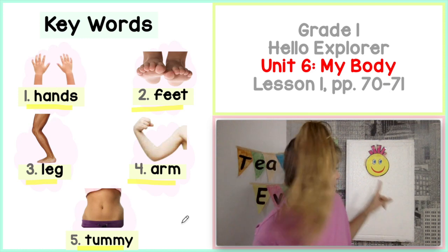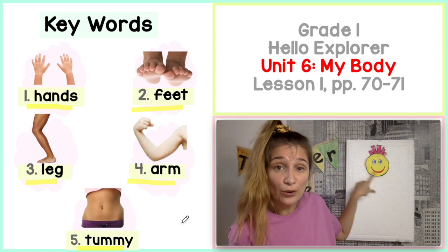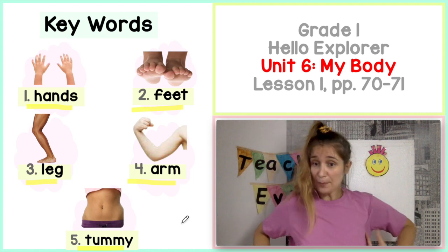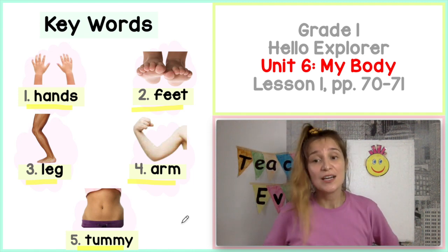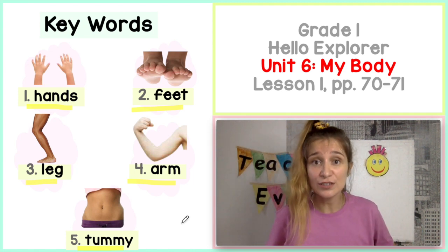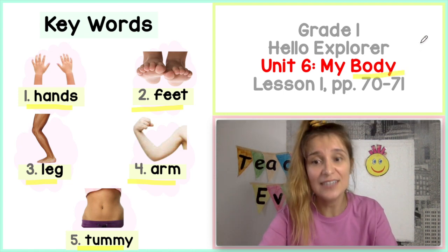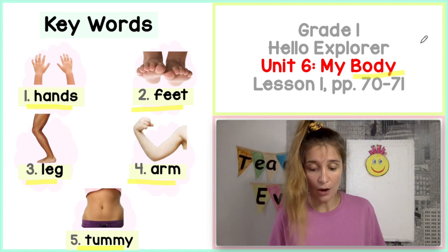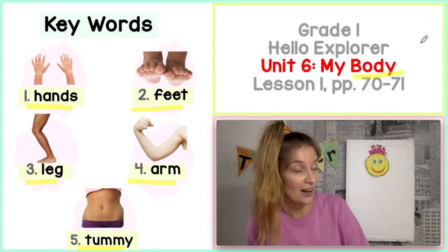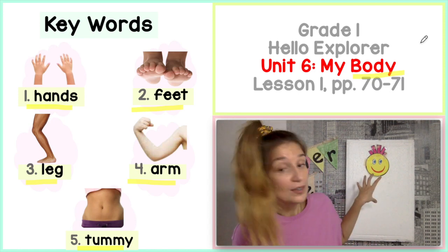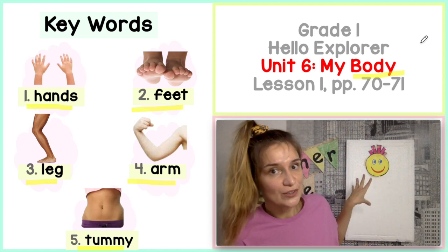Oh, but Mr. Happy doesn't have a body. Mr. Happy doesn't have a body. Pan Happy nie ma body, nie ma swojego ciała. Body. Okay, so we need to add body parts to the board. Musimy doczepić część ciała do tablicy.